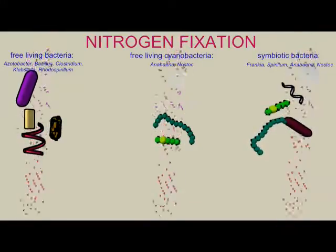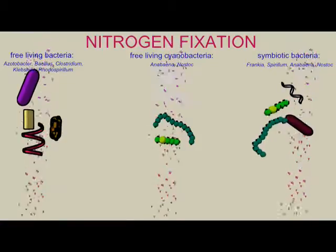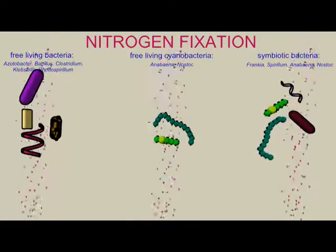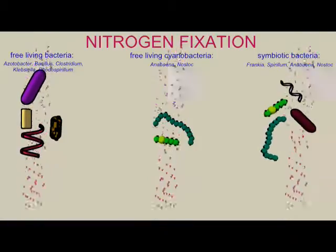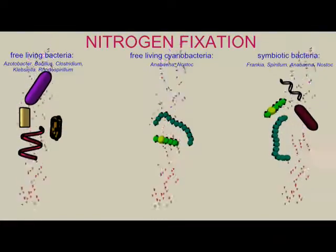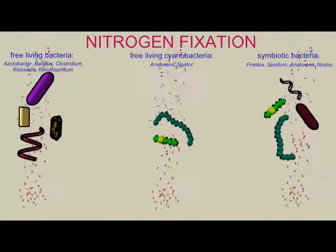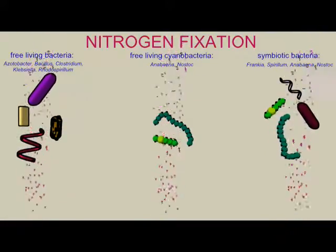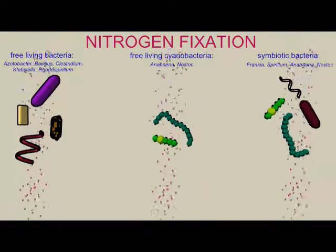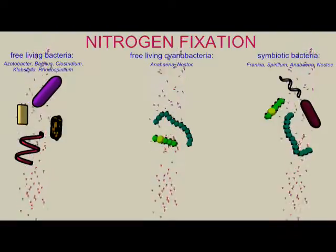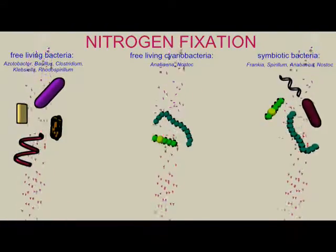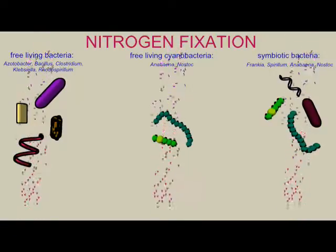Some of the bacteria which perform nitrogen fixation can live in symbiosis with other organisms and thus provide nitrogen for them. Rhizobium can live in the root nodules of clover, soybean, and alfalfa. Frankia can live in the root nodules of alder trees. Spirillum can live in the roots of tropical grasses. Anabaena can live in the roots of tropical aquatic ferns, and Nostoc is associated with a tropical herb.